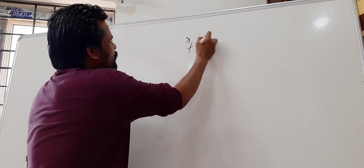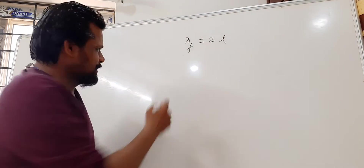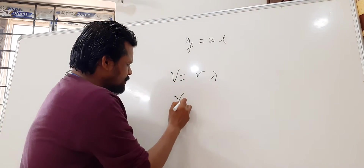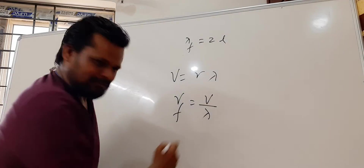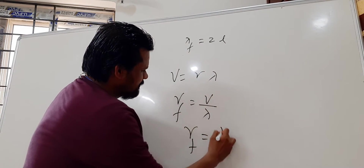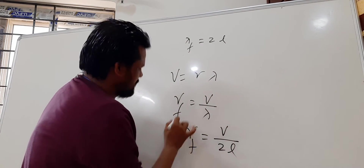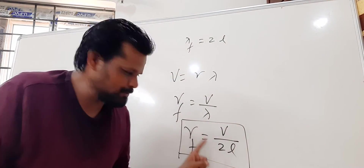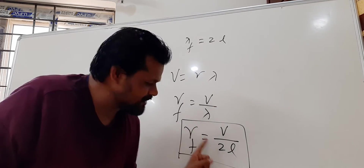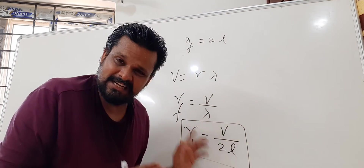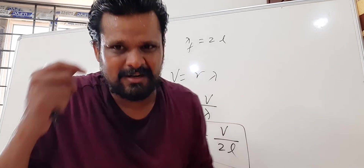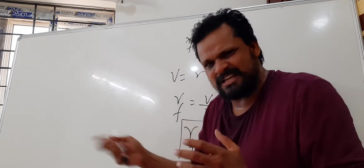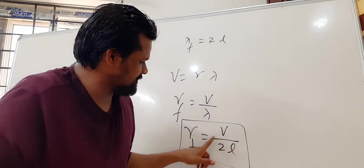So we got lambda equal to 2L. Since velocity equals frequency times lambda, the frequency comes out as V divided by lambda, which is V divided by 2L. Please remember: at this frequency, if the speaker sends this frequency, you will hear a huge sound — that is the resonance frequency.